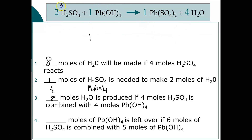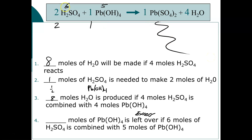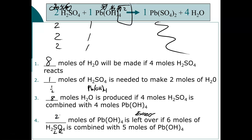Number four: how many moles of lead-4 hydroxide is left over if six moles of sulfuric acid combine with five of lead-4 hydroxide? It's already telling us PbOH₄ is the excess. Go through the reaction once: use 2 H₂SO₄ and 1 PbOH₄ — down to four H₂SO₄ and four PbOH₄. Go again: down to two H₂SO₄ and three PbOH₄. Go again: down to zero H₂SO₄ — that's why sulfuric acid is the limiting reagent. Two moles of lead-4 hydroxide are left in excess.